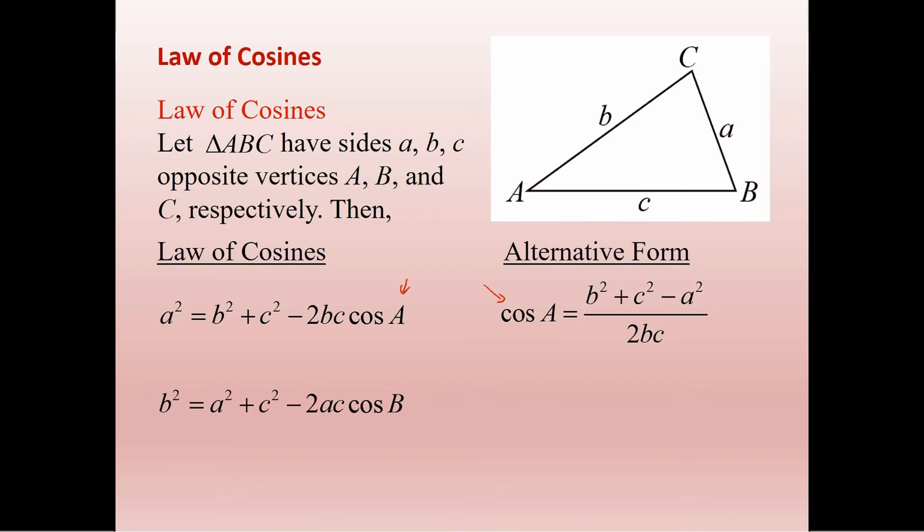And then, of course, the alternate version we could solve for cosine B and get A squared plus C squared minus B squared over 2AC. Now that leaves us with only one.